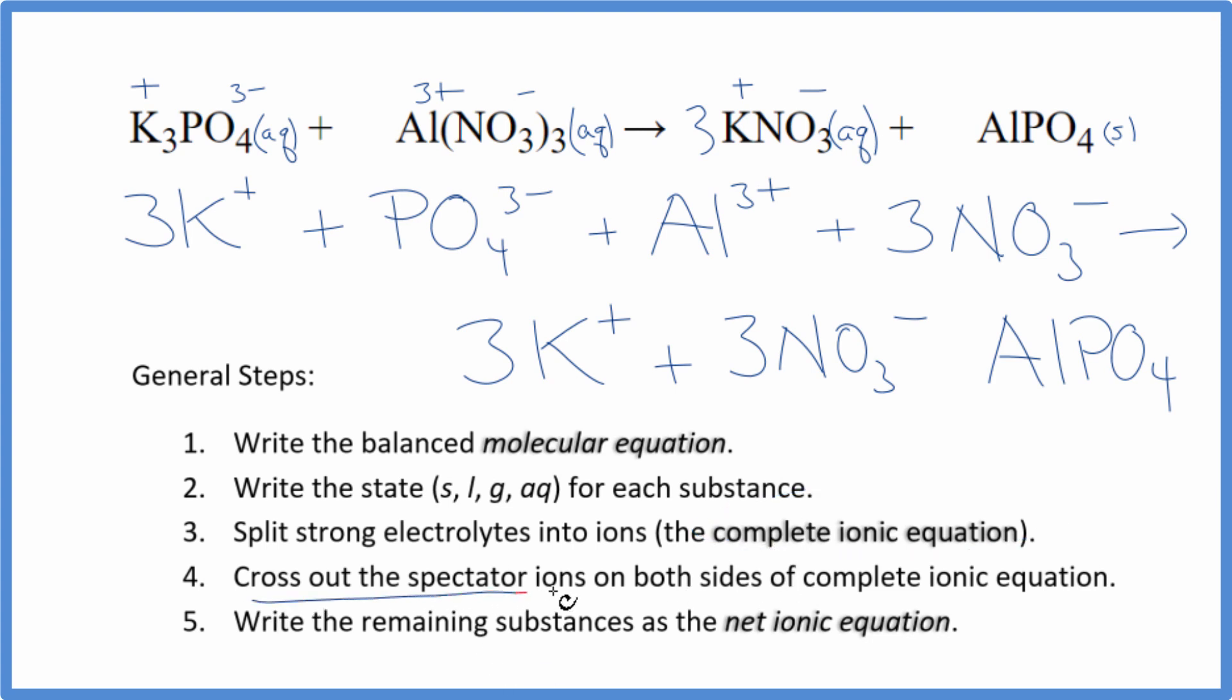At this point, we can cross out the spectator ions. They're on both sides of that complete ionic equation. In the reactants, I see there are three potassium ions. And here in the products, those are spectator ions. Get rid of those three nitrate ions right here. And in the products, again, three nitrates. We get rid of these.